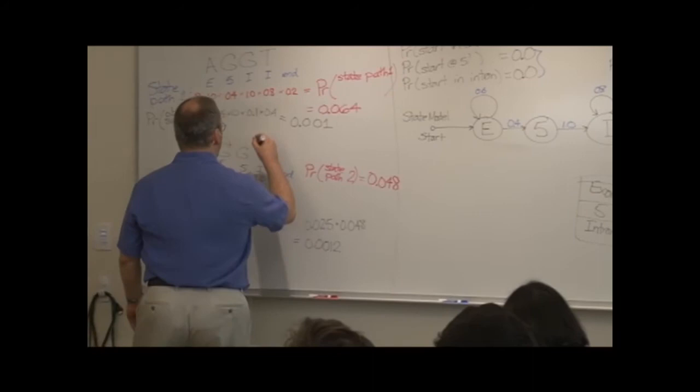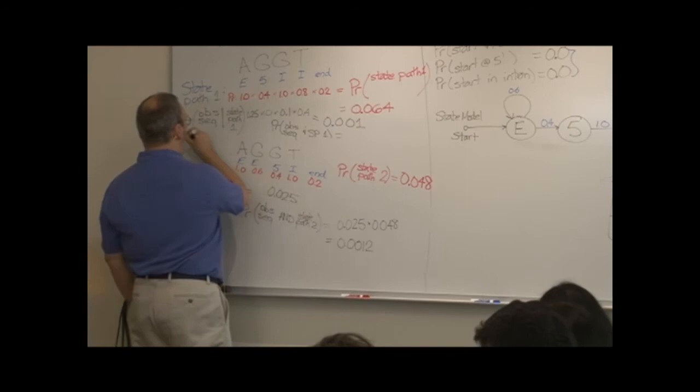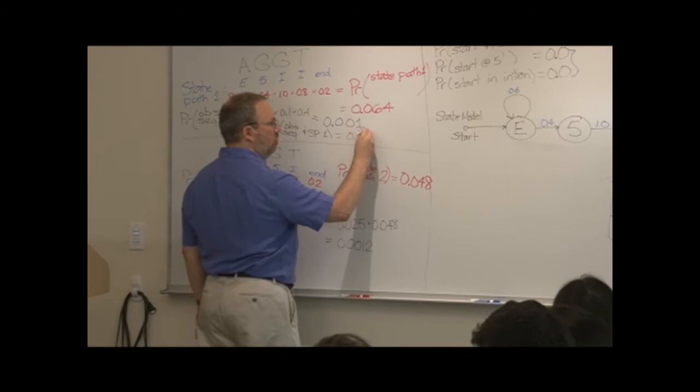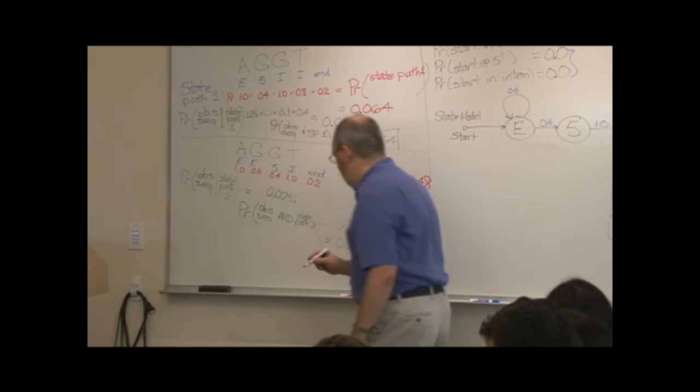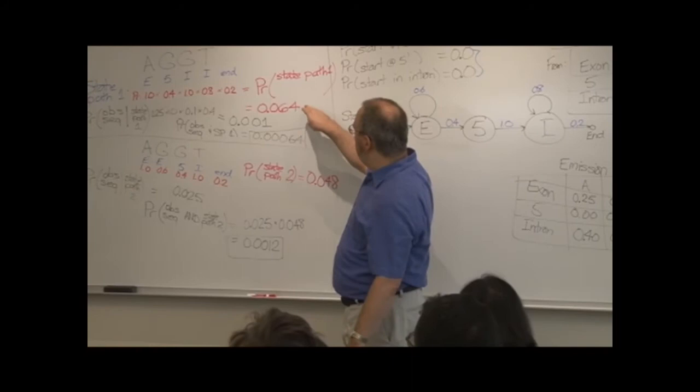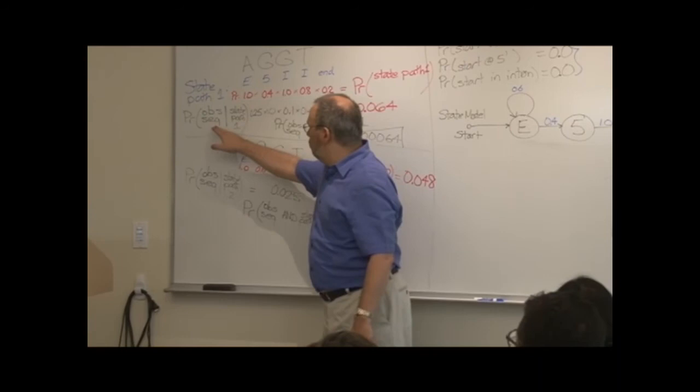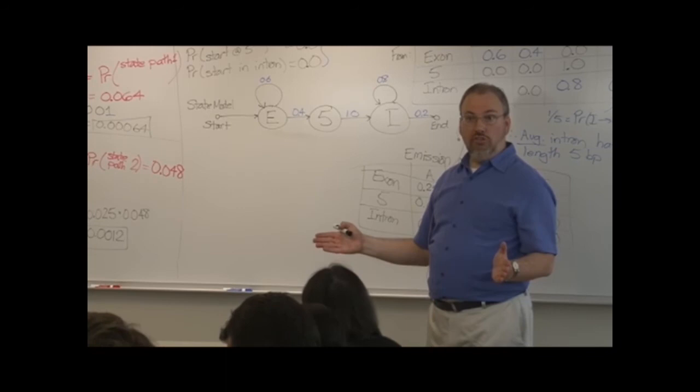That is what I got as well. And we could do something similar for the probability of the observed sequence and state path one. I will just give you, well, you can probably see how that's going to work. That's going to be 0.00064, thanks to the magic of the decimal system. So know what we've done. We've calculated the probability of each state path. We've calculated the probability of the observed sequence, assuming that state path, and then we've combined those probabilities just by multiplying them. Okay so far?